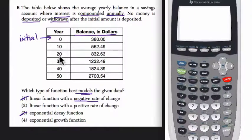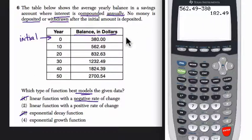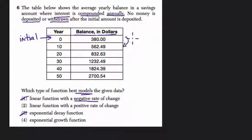What you're looking for to test if it's linear or exponential is how the balance is increasing over time. So we're going up from 380 to 562.49, so on the calculator, you can set this up on paper or whatever, subtract those two numbers, find the difference, and you get 182.49. So that means that it's gone up from 380 to 562.49 by a difference of 182.49.